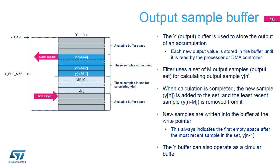This figure explains the Y buffer operation. When the write pointer reaches the end of the buffer, it wraps back to the beginning. A read pointer designates the oldest unread sample corresponding to the output data register. When a sample is read and is not part of the output set, the space becomes free. If the write pointer equals the read pointer or the least recent sample in the output set — i.e., Y(N−M) — the filter stalls and the output buffer full flag is set.